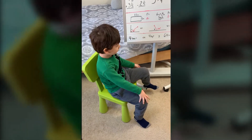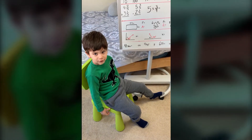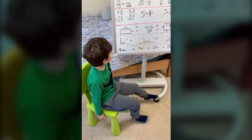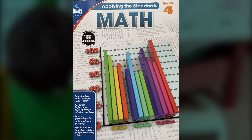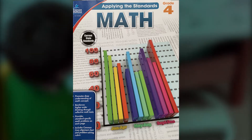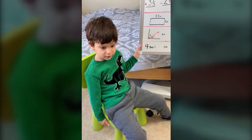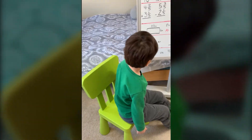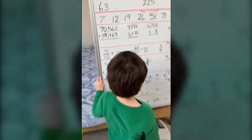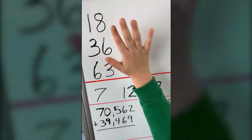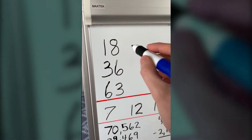Hi everyone, I'm Jonathan Peck. I'm four years old. Today we're going to do very hard questions for you, which is fourth grade math. So I'm going to tell you the factors of 18, so they are 1, 2, 3...